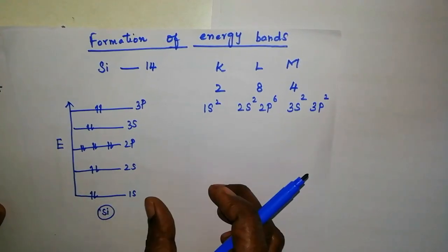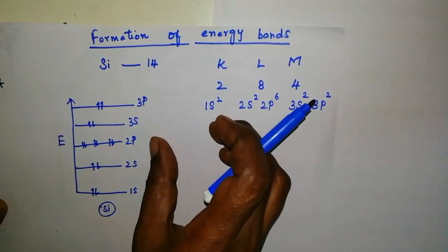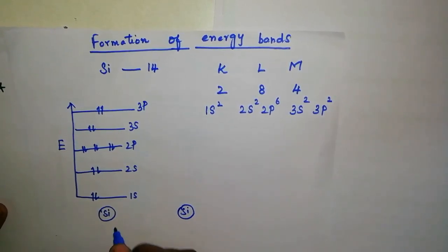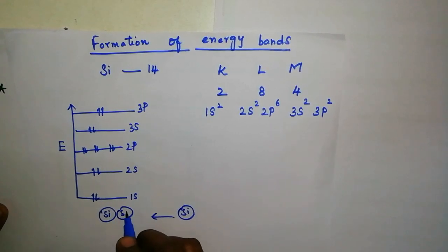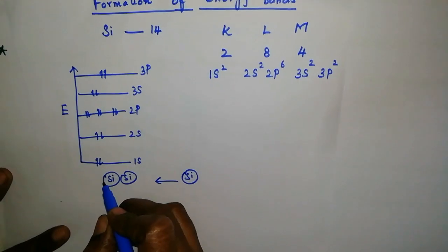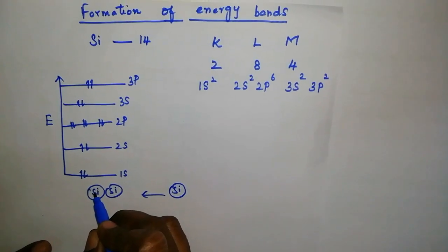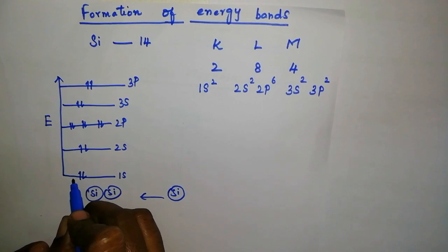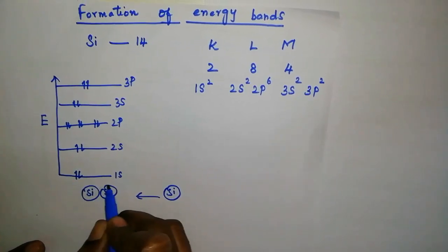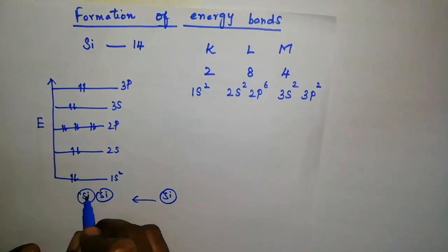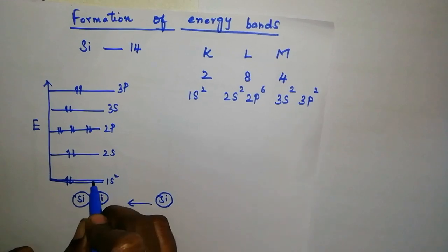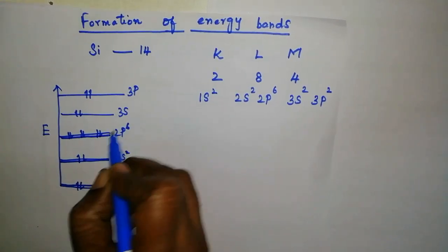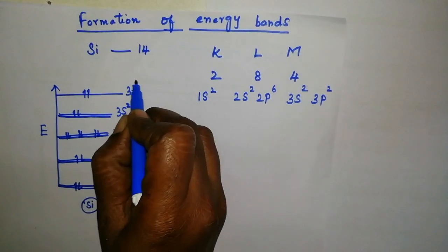Consider one more silicon atom here and the discrete energy levels of that silicon atom has been drawn. When these two atoms are brought closer together, they form a combined system and the energies will not be in the same level but it will change. They form closely spaced two energy levels such as 1s of one silicon atom and the 1s of another silicon atom. Similar way for 2s2, 2p6, 3s2 and 3p2.